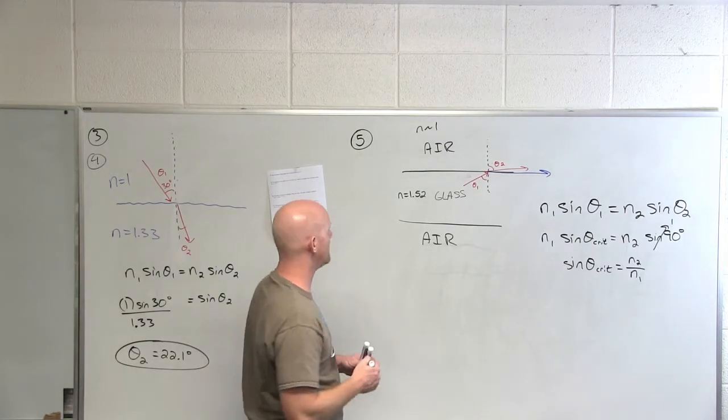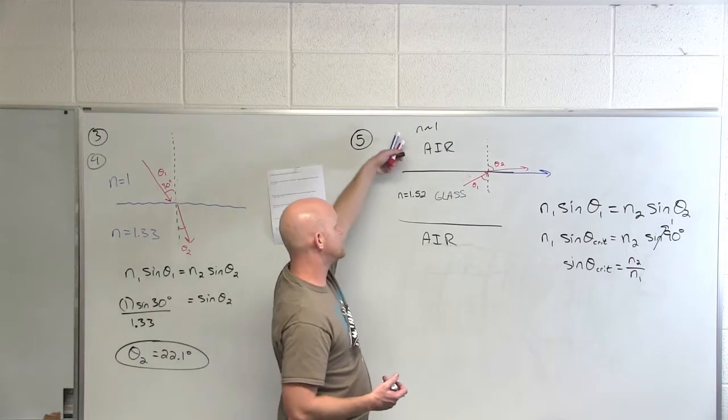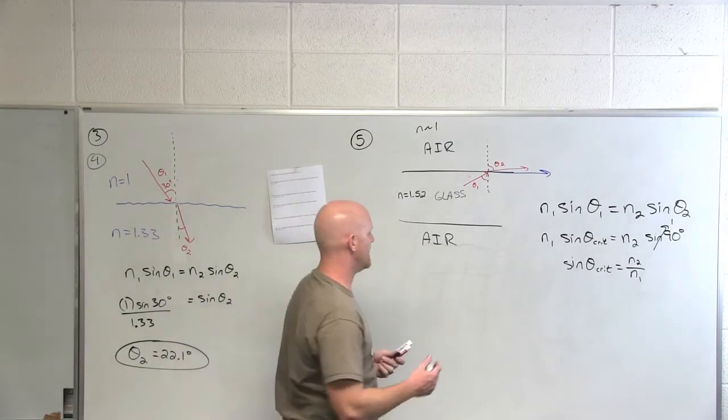That formula is also on the front of your handout. In this case, all we really need to know is the two indices of refraction between glass and air here.